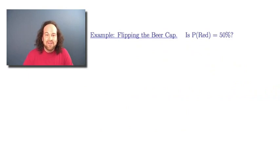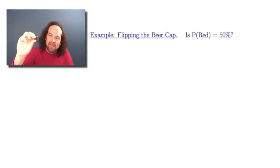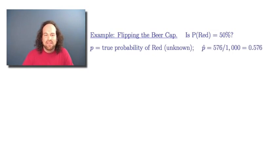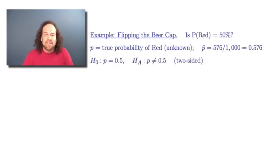For another example, let's go back to flipping a beer cap and figuring out if the probability of getting the red side up was 50% or some other value. The true probability of red is p, which is unknown. Our observed p-hat was 576 red flips out of 1,000, which is 0.576. The null hypothesis is that p equals 0.5, and the alternative is that p is any other value besides 0.5 — so this is a two-sided test.